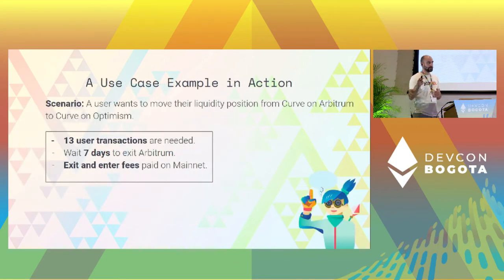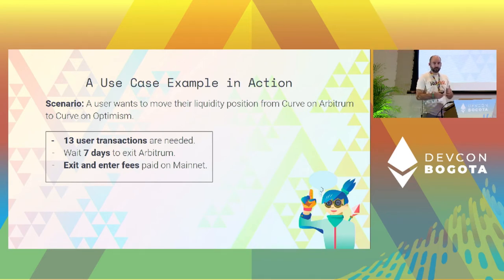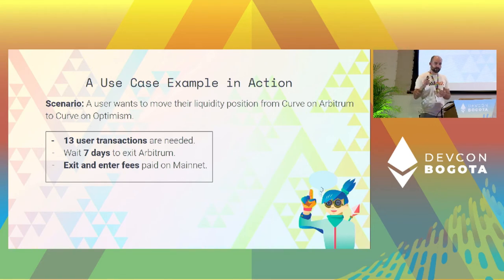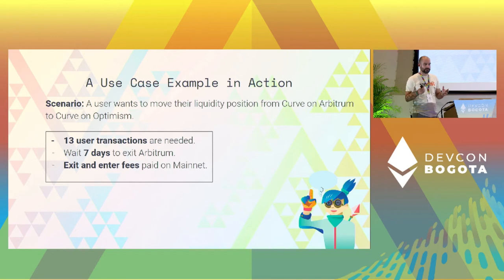Here's an example use case from a user perspective. A user has some liquidity on Curve on Arbitrum and they want to move it to Optimism. To do that they need at least 13 transactions — wallet confirmations — and they need to wait seven days for exiting the rollup, and of course they need to pay the exit and entry fees on mainnet.